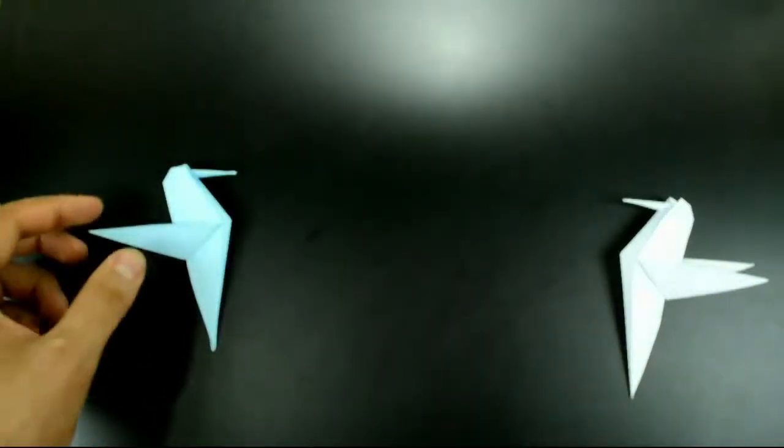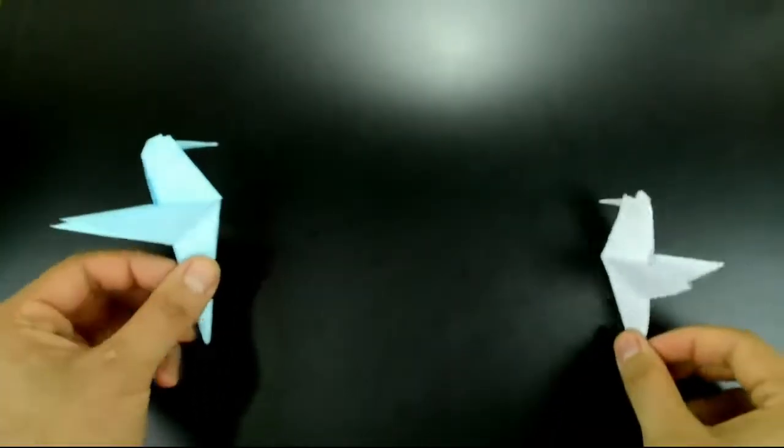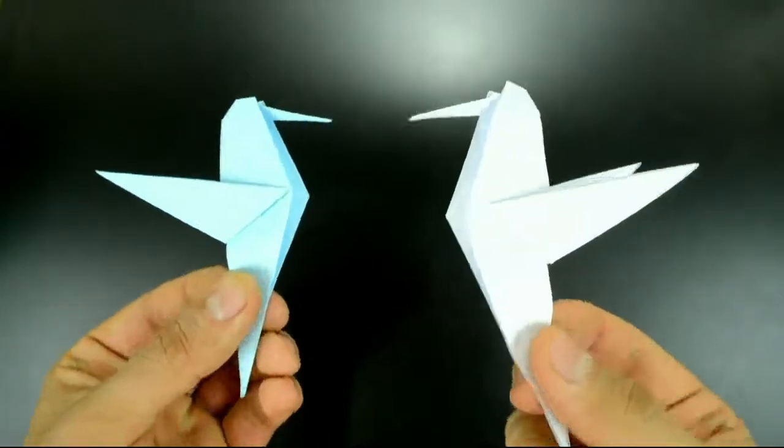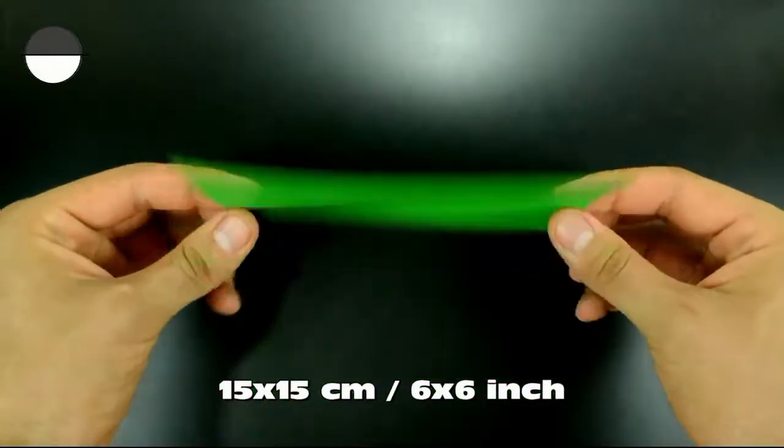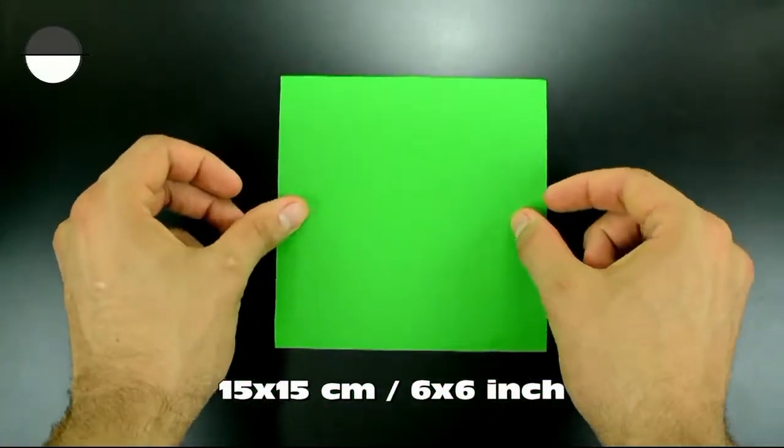To do so you only need one square of paper of any type and any size. In this video I'll use 15x15 cm, 6x6 inches. If only one side is colored, start with the white side down.